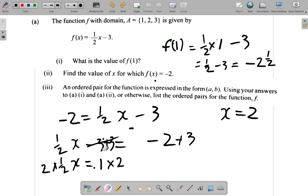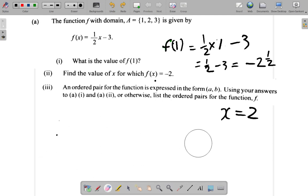Now let's look at the third part of this question. An ordered pair for the function is expressed in the form A, B, in brackets. Using your answers to part A1 and A2 or otherwise, list the ordered pairs for the function F. So you had 1, 2, and 3 as a domain.